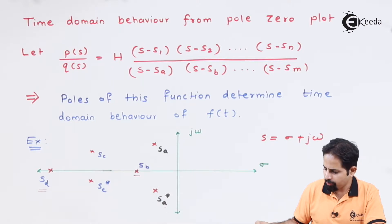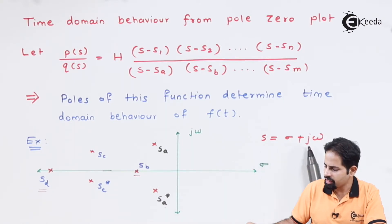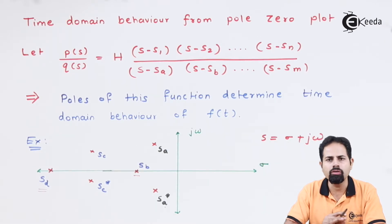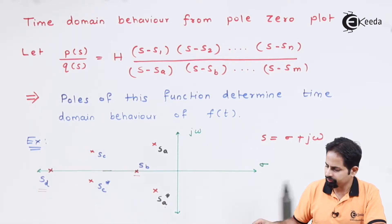Let us see for the first pair, sa and sa conjugate. We know that s is sigma plus j omega. Now this pole being on the left hand side, that means the real part is negative. This is what we know from restriction on poles and zeros, which is a topic of separate video which already you can refer.